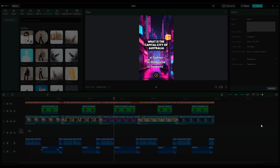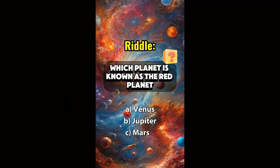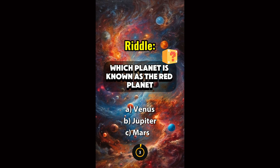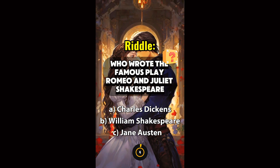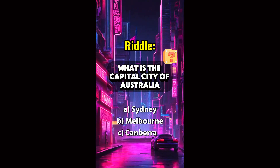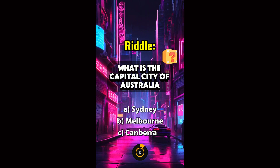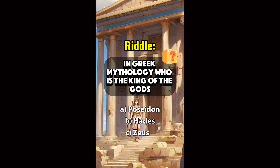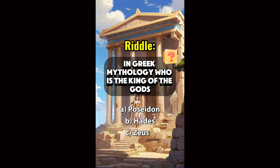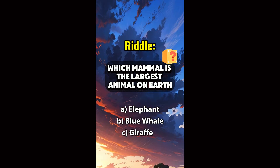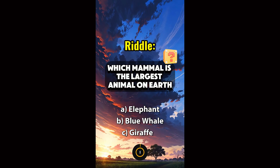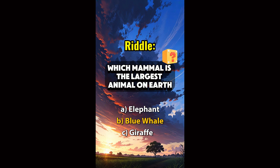Let's see the result. Which planet is known as the red planet? Mars. Who wrote the famous play Romeo and Juliet? Shakespeare. What is the capital city of Australia? Canberra. In Greek mythology, who is the king of the gods? Zeus. Which mammal is the largest animal on earth? Blue whale.